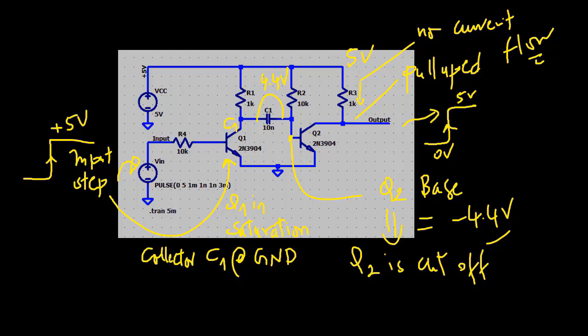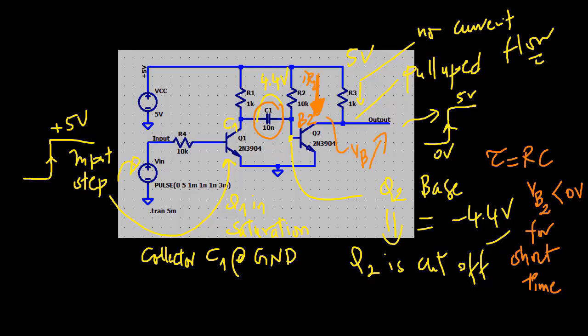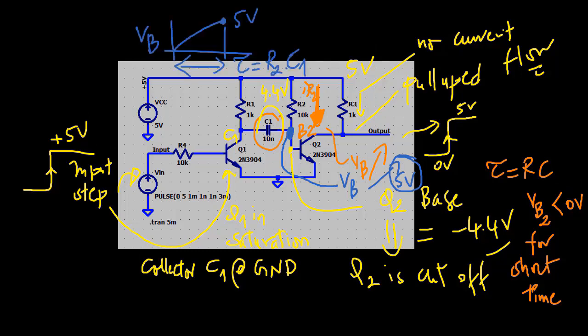Now for the time constant RC, C1 can't hold Q2's base below ground forever because current is flowing down through R2 trying to pull it up. So the right terminal of the capacitor charges toward plus 5 volts with a time constant tau equals R2 times C1 here equal to 100 microseconds.